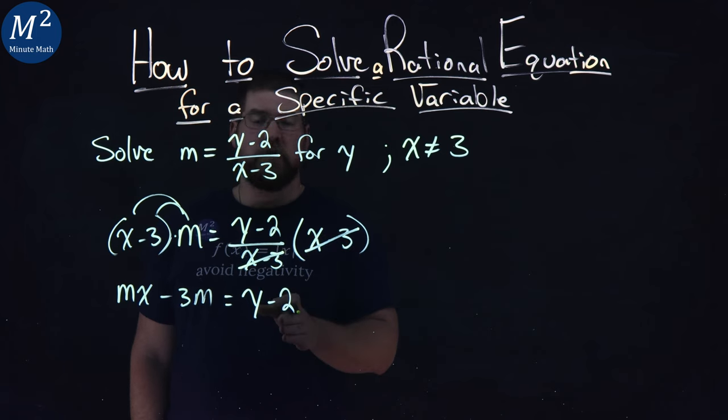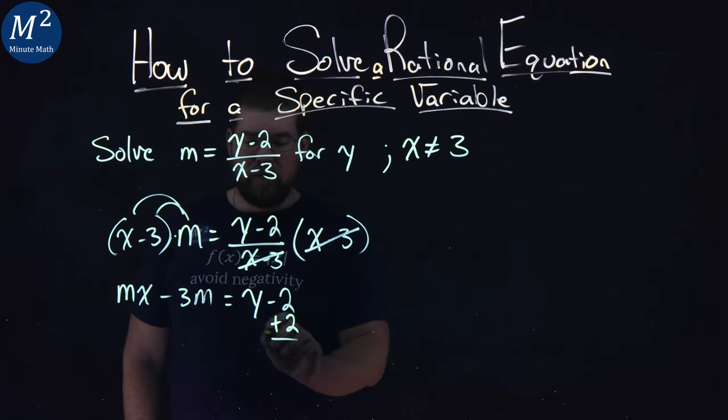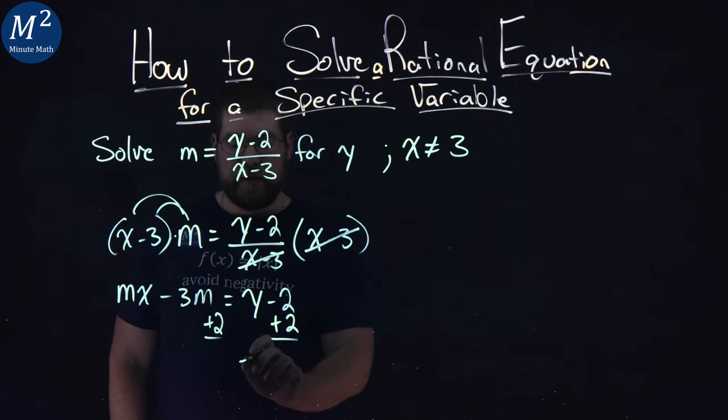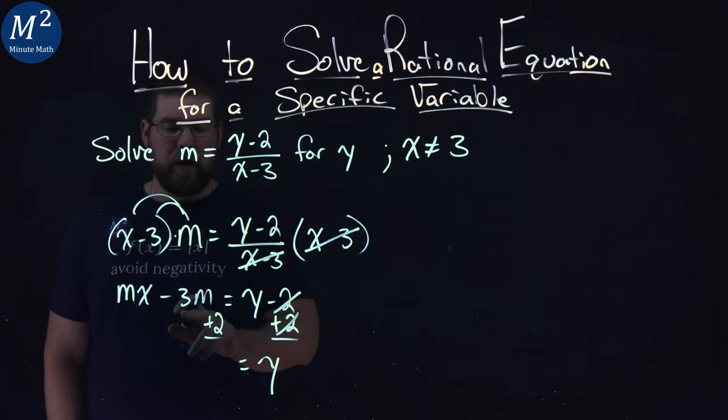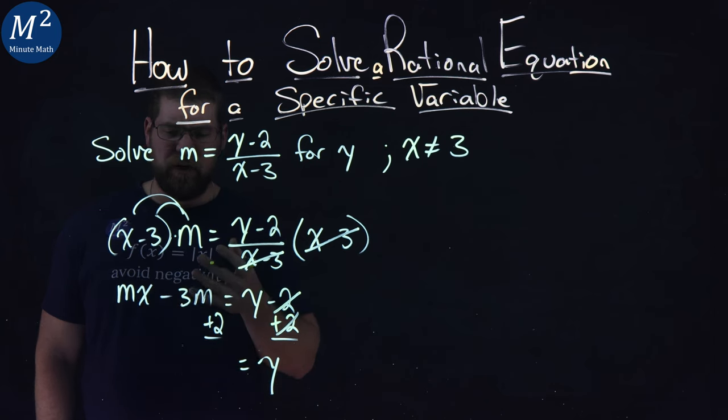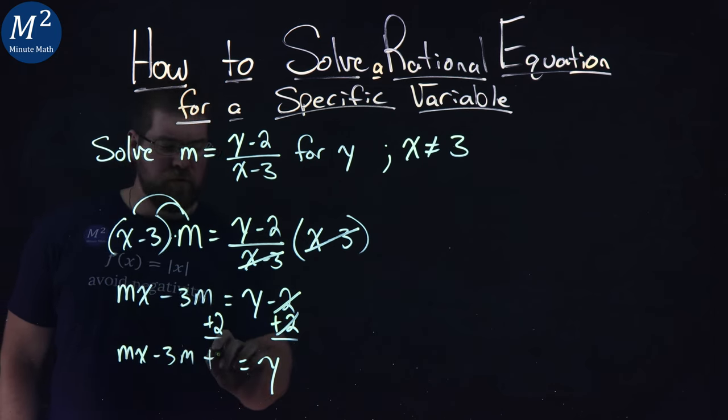Now, same rules apply. We have a negative 2 on the right. If we add 2 to both sides, we're going to combine it to its like terms, and we get y by itself. 2's cancel on the right. Well, mx minus 3m aren't like terms with 2. They're not like terms with each other, either. So, we have mx minus 3m plus 2 here.